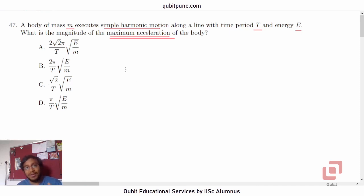So, we will start the problem by writing down the expression for the maximum acceleration of the body. We know that A max is equal to amplitude A into square of the angular speed, omega squared.